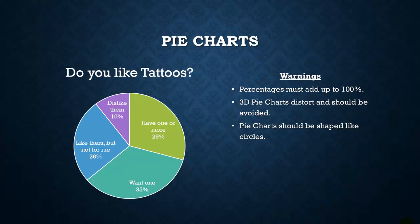In addition, 3D pie charts look cool but will actually distort the data, so you should just avoid them altogether. The pie chart should also be shaped like a circle — that seems obvious, but people wanting to be creative graphically might create something that's not a circle, and that can distort the truth.